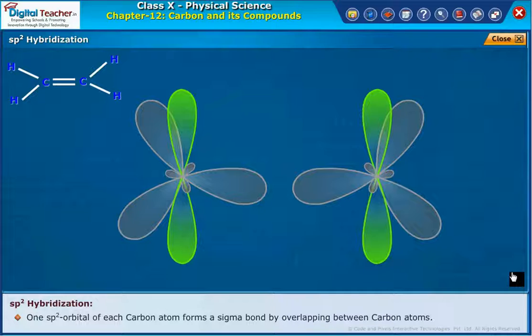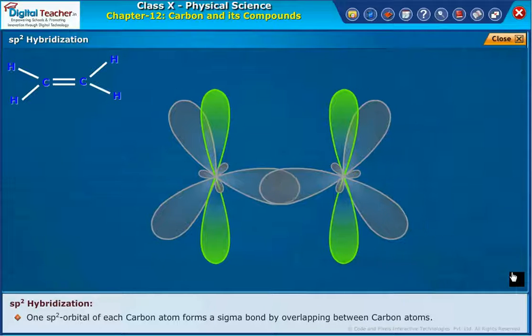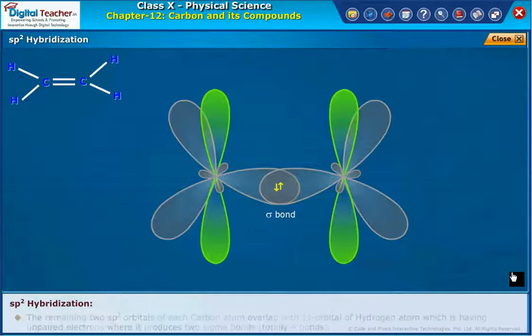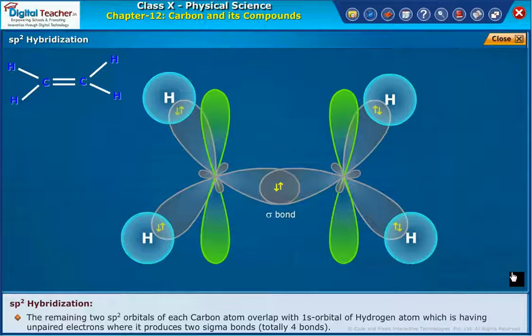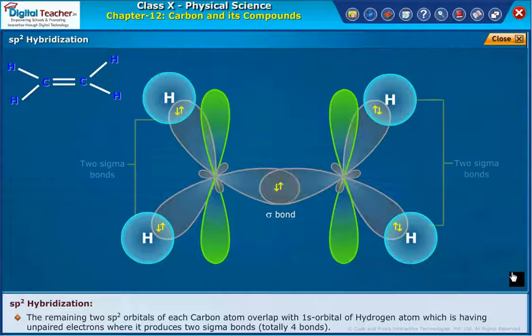One SP2 orbital of each carbon atom forms a sigma bond by overlapping between carbon atoms. The remaining two SP2 orbitals of each carbon atom overlap with one S orbital of hydrogen atom, which have unpaired electrons, and produces two sigma bonds, totaling four bonds.